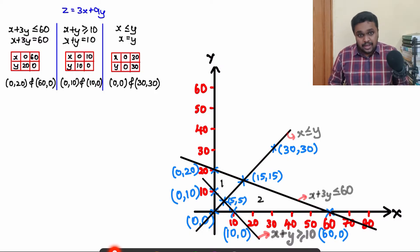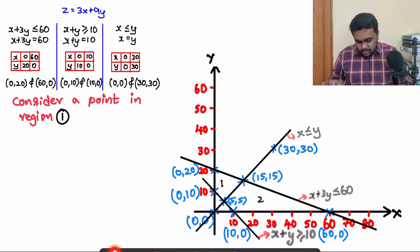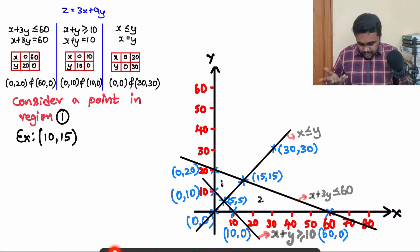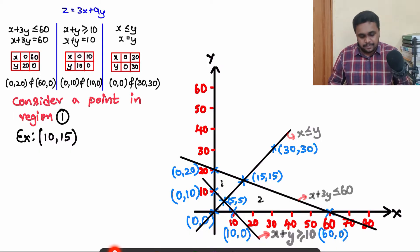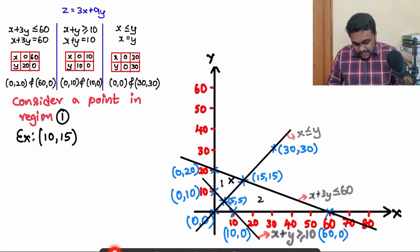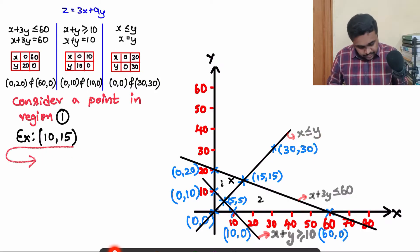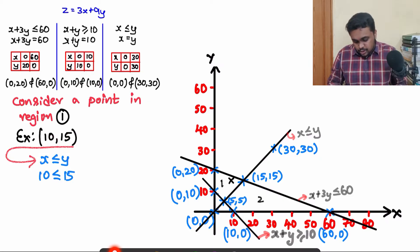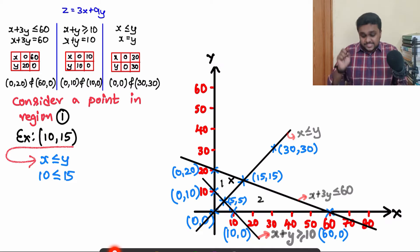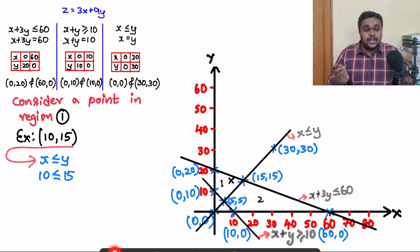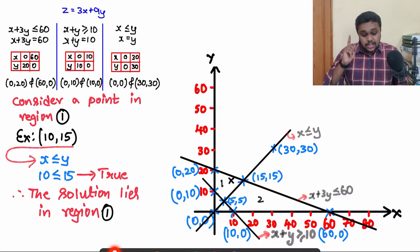I consider point (10, 15) in region 1 and substitute into x ≤ y: 10 ≤ 15. Is this statement true or false? This statement is true. Therefore, the solution lies in region 1, so region 1 is the valid shaded region.